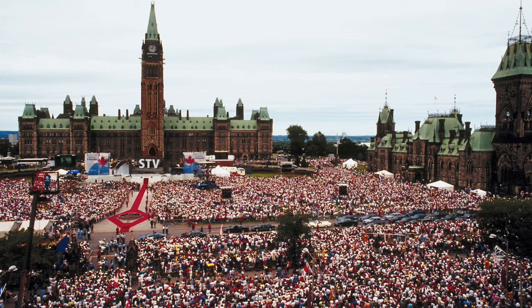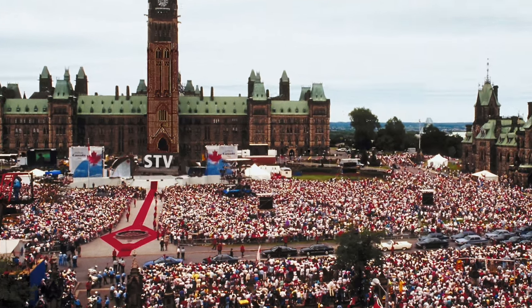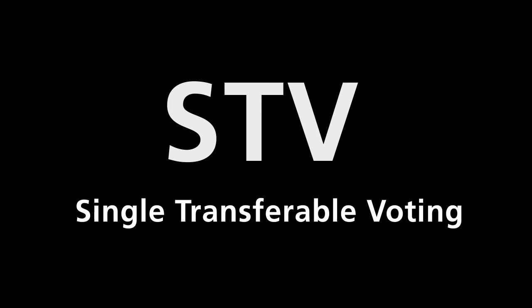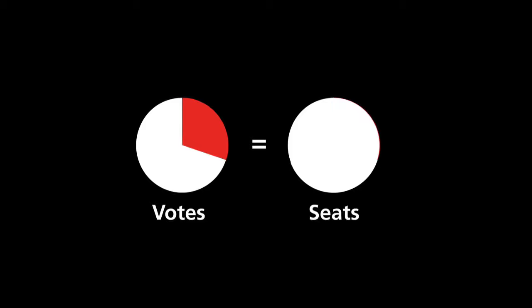This is a quick overview of how to improve an election process by adopting a version of proportional representation called STV, or single transferable voting. Proportional representation means that the number of seats a party gets is proportional to its share of the popular vote. So if a party gets 30% of the popular vote, it gets about 30% of the seats in government.